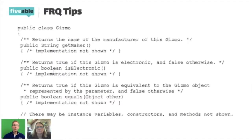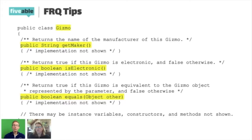But if I look at that code and immediately jump to the name of the class, the functionality associated with that type, and realize there are no instance variables and no constructors, I know that's a type I'm going to be using for this particular problem. I just need to remember: a Gizmo is something that can get its maker, check to see if it is electronic, and check to see if it's equal to another Gizmo. Students need to be able to look at that and understand by glancing at the code — that's the abstraction.